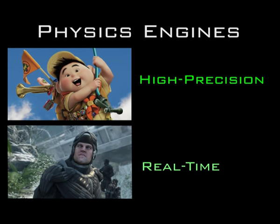Real-time physics engines are engines that don't include the small, unnoticeable physics. While still having everything needed to create a realistic environment, this allows them to render faster and is therefore ideal for game engines to use.